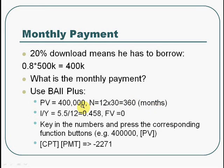For the interest rate, it is 5.5% per year, but for every month it is 5.5 divided by 12, so it will be 0.458. The future value will be 0. Think of this as a cash flow problem: present value is $400k inflow, and every month you have a payment which is an outflow. We have to calculate this payment. After 360 months, the total value should be 0 — that's why future value is 0.